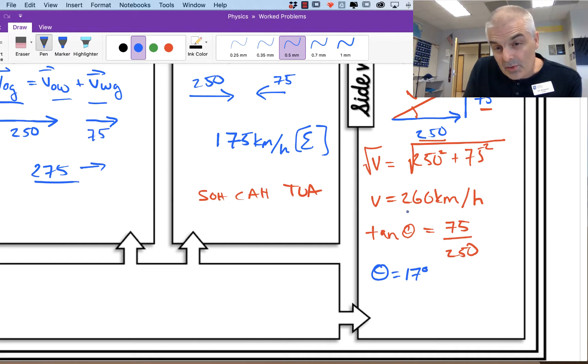What you end up with is an angle of theta equal to 17 degrees. So it's not just that he's going 260 kilometers per hour, he's going 17 degrees to the northeast at this speed. You see how you have to add the resulting vectors.